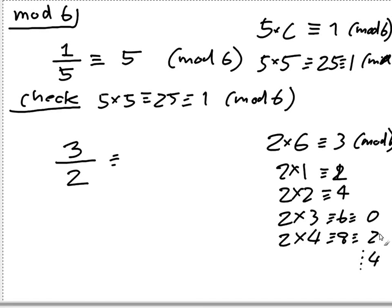2 times 4, that's going to be 8, that's 2. 2 times 1 is 2, sorry. And then, you get a sequence of 2, 4, 0, 2, 4, 0. So, you're not going to get anything here. You cannot find any value C, such that 2 times C equals 3. So, this question has no solutions.